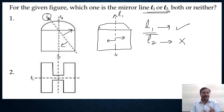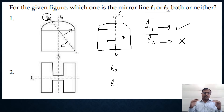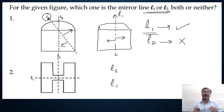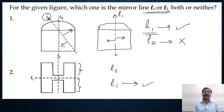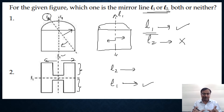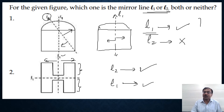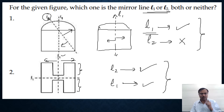Now watch this alphabet H. The horizontal line L1 divides H so that on top of L1 you have half of the figure and below L1 you have the other half — and the two halves are exactly the same, so L1 is a mirror line. Similarly, on the left side of vertical line L2 and on the right side the two parts of alphabet H are exactly the same, so L2 is also a mirror line. So in the first figure only L1 is the mirror line, but for alphabet H both L1 and L2 are mirror lines.